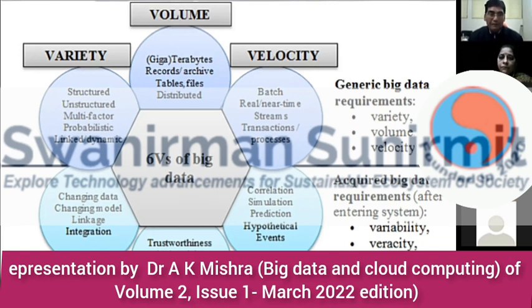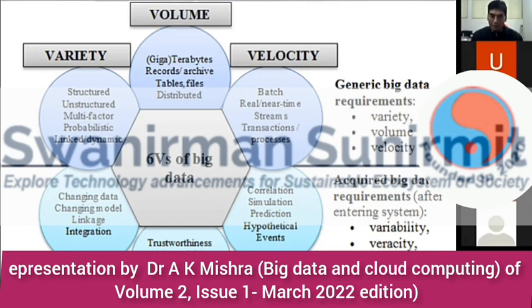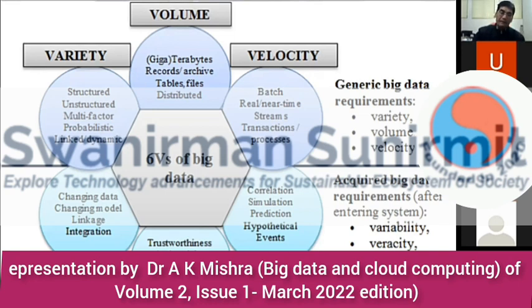So three Vs — variety, volume, and velocity — are the generic big data requirements. The acquired big data requirements, after data comes to the system, include data variability — meaning changing data, changing models, different linkages, and how to integrate all the data sets. Veracity means how trustworthy the data is, how authentic it is — accountability, availability all come under veracity. The value of data refers to correctness, hypothesis, simulation, and prediction of events.